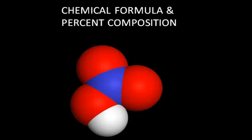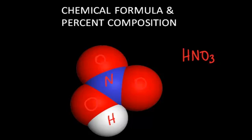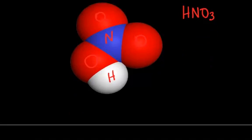Take this compound for example — this is nitric acid. That's a space-filling model of the nitrogen, three oxygens, and one hydrogen. So the chemical formula for nitric acid is HNO3. From that information we can determine the number of atoms: one hydrogen atom, one nitrogen atom, and three oxygen atoms in that particular compound, but also the mass percent.